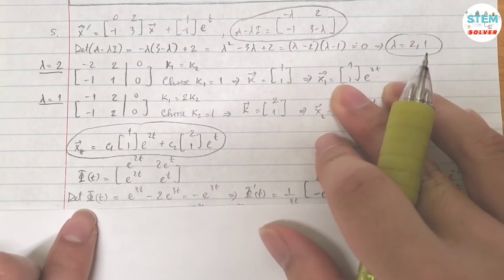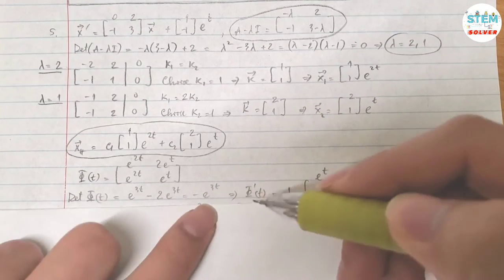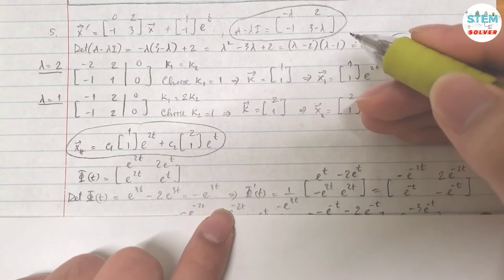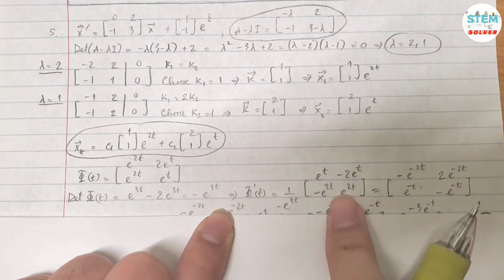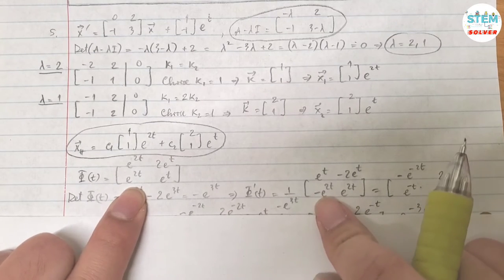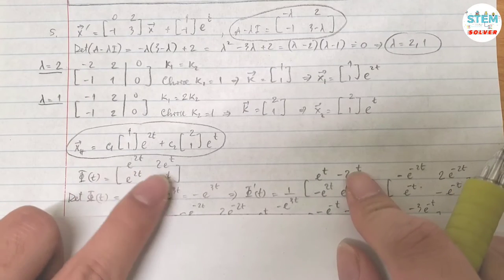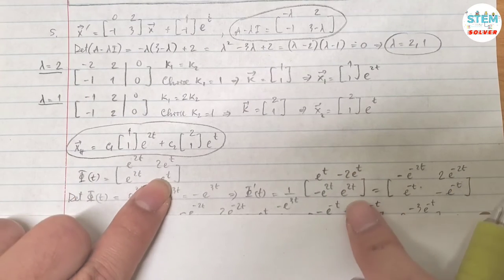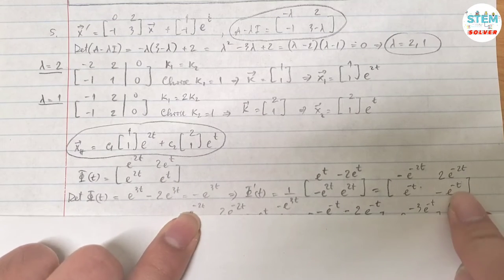Then you are going to find the determinant of phi(t), which is negative e^(3t). And then phi inverse, which is 1 over the determinant times a matrix. This matrix is equal to: for the upward diagonal line, you are going to multiply by negative 1. For the downward diagonal line, you are going to switch the positions. Multiply by 1 over the determinant, that gives you this matrix.